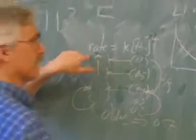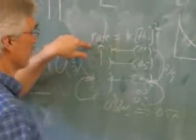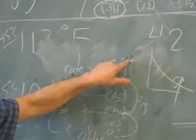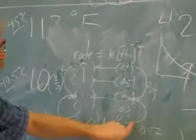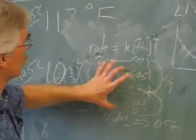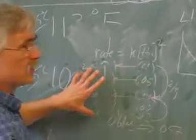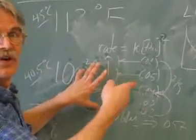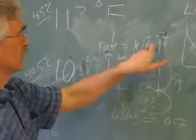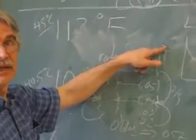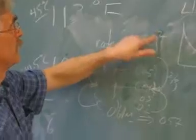So tripling the concentration wouldn't have an impact? If it was behaving second order, then by tripling the concentration of one of the chemicals, the rate should correspond by triple squared — because it's exponential. If it was second order, that's how it would behave.